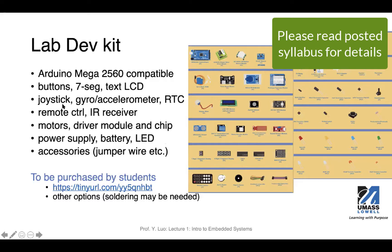We will use many of these components — for example, buttons, seven-segment displays, two-line text LCDs, joystick, gyro and accelerometer sensor, real-time clock sensor, and the IR receiver and remote control. We will also use motors, driver chip, and driver module, as well as a power supply for the DC motor or battery. We will use LEDs to show the status. To connect these components on a breadboard, you need jumper wires, which are included in the kit.